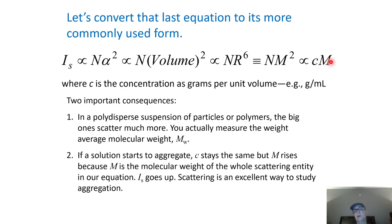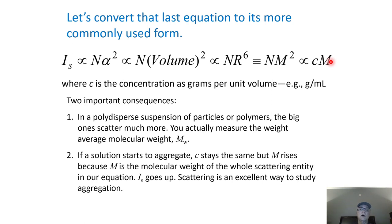What that tells you: if you have a bunch of small objects that slowly aggregate in time, the concentration c in grams per milliliter stays the same, of course. But if the mass of the whole object goes up, you can see it very well. So light scattering is exquisitely sensitive to aggregation, and that's one of its main applications — looking at things that aggregate.